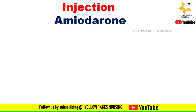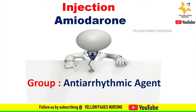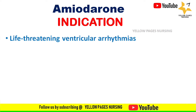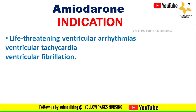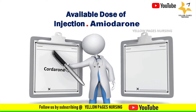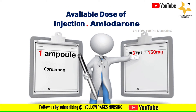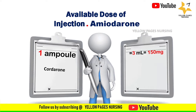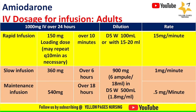Injection amiodarone comes under the group anti-arrhythmic agent and it is indicated in case of life-threatening ventricular arrhythmias like ventricular tachycardia and ventricular fibrillation. Injection amiodarone, otherwise called Cordarone, comes in ampoule form with 1 ampoule containing 3 ml which equals 150 milligrams of strength.